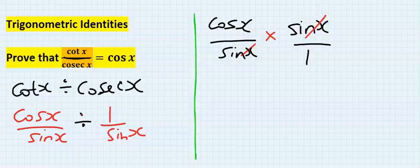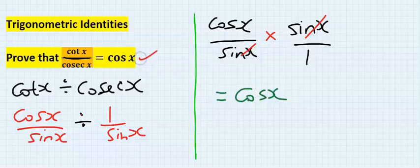Sine x, we take away sine x, and we are left with only cos x. And this is the result.